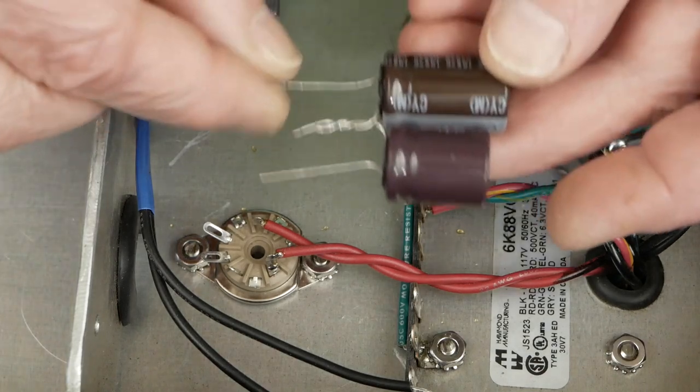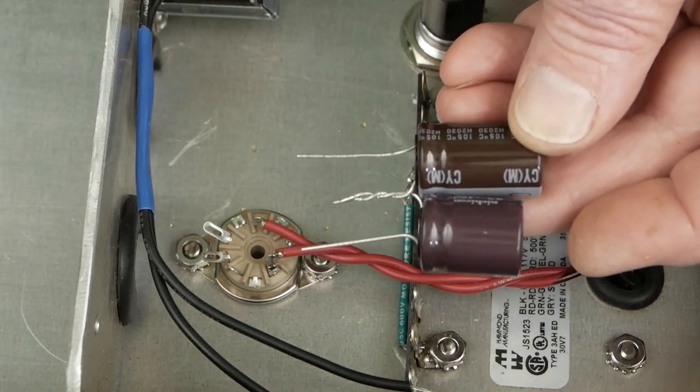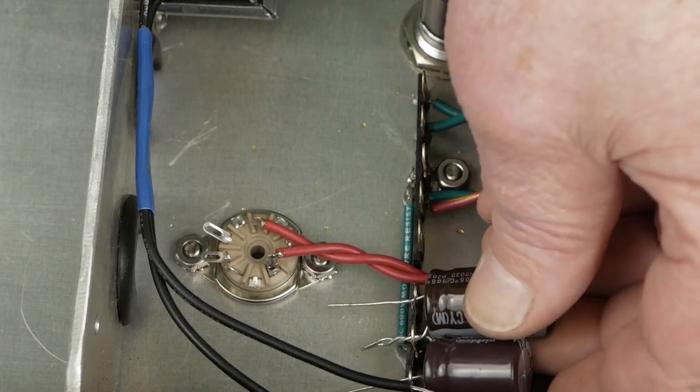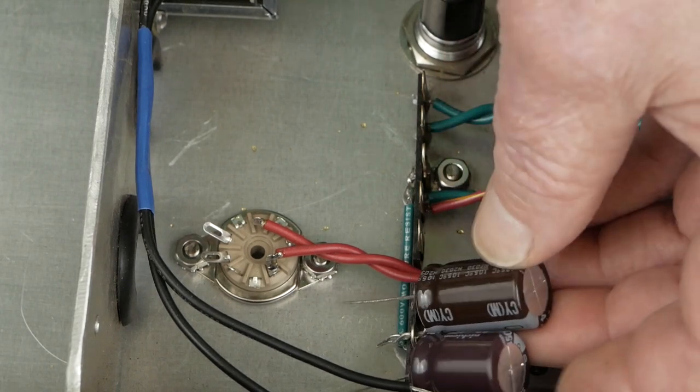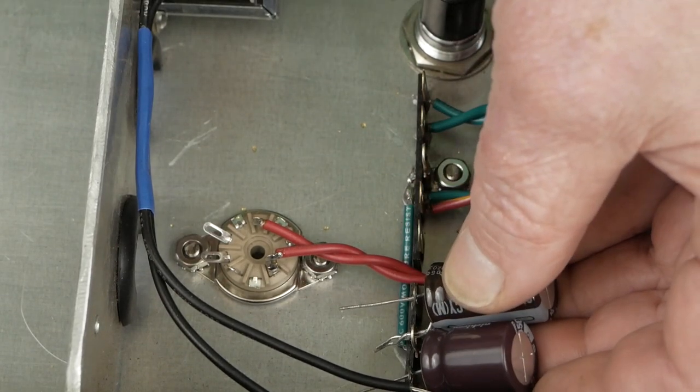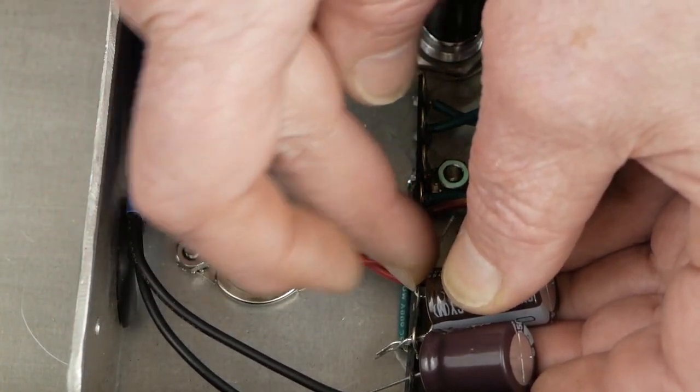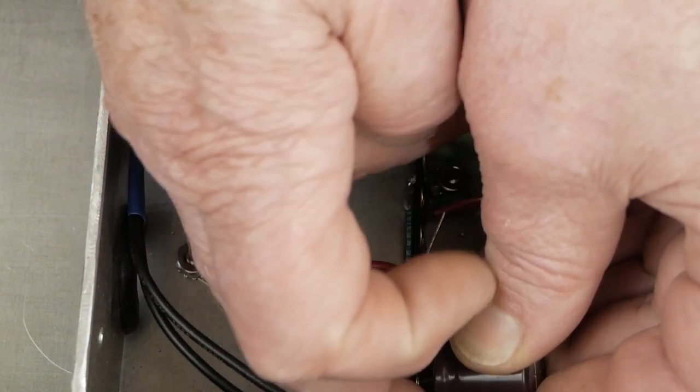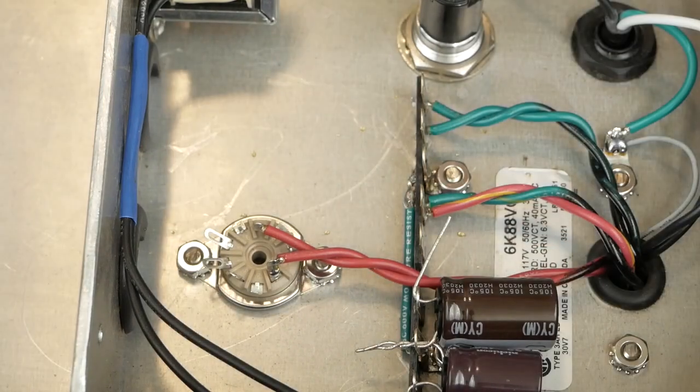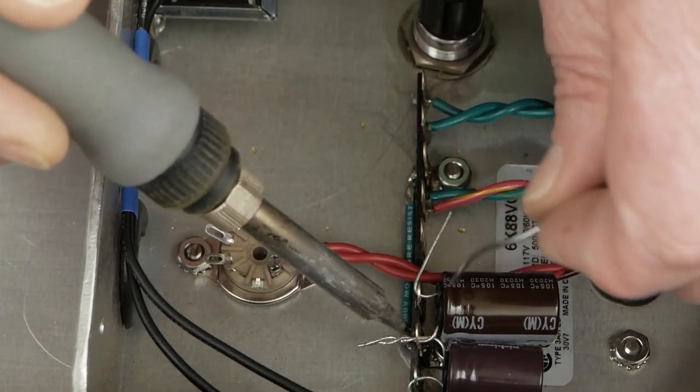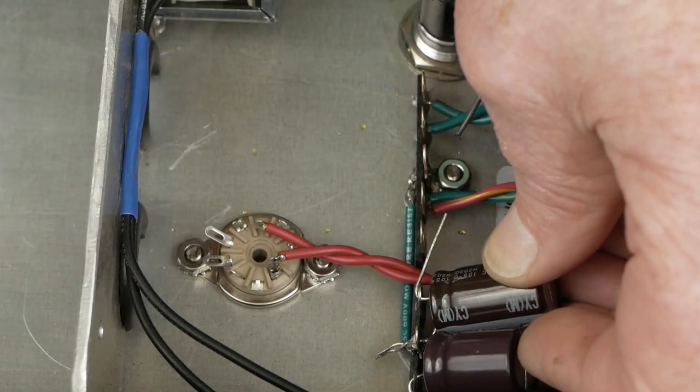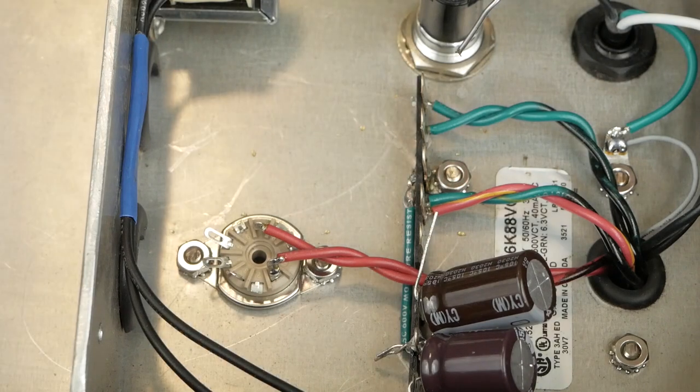So now we have our star ground point established here with our center taps hooked up and we can start soldering these capacitors in. So I took these two and did them like this and these guys are going to go just like this. I'm probably going to stand them up a little bit like that. We've got plenty of room here and we can get it away from that high voltage wiring. So I'm going to bend that one over, bend that one over, and solder up this center part and then stand them up while it cools off. And there's those two caps.